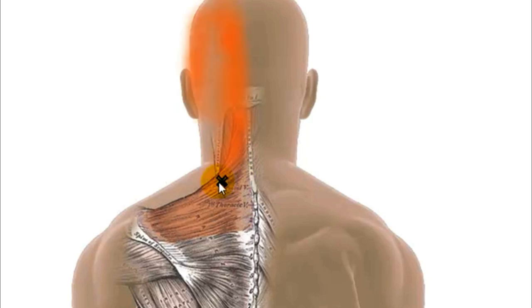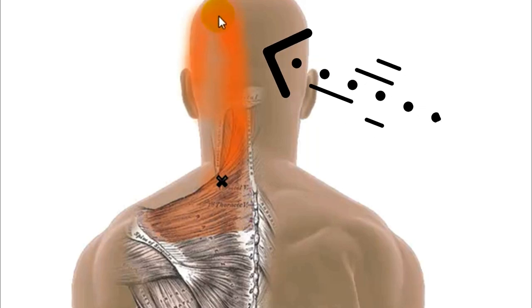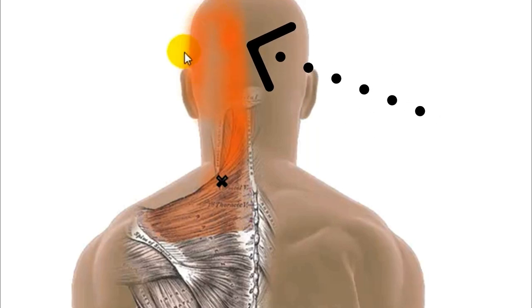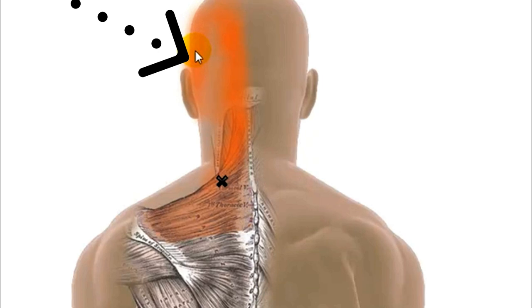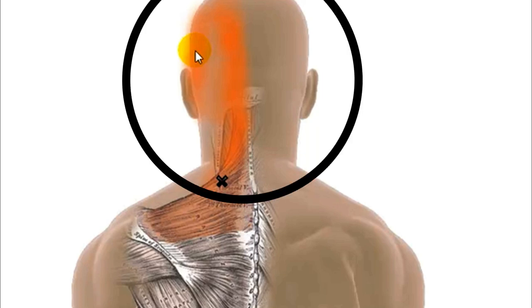But when this trigger becomes active, it will refer pain in a very particular pattern. It will refer it upwards to the base of your skull and then it will refer vaguely into the back of the head and much more strongly into the temple on the same side of your head. Now this is the typical tension headache.